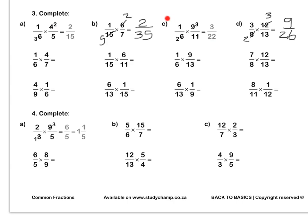Press pause to complete questions C and D by yourself. Question 4: in this sum, we have simplified the 9 and the 3 by dividing both by 3. Then we multiply out to get six fifths, which is an improper fraction, which we write as 1 and one fifth as a mixed number.